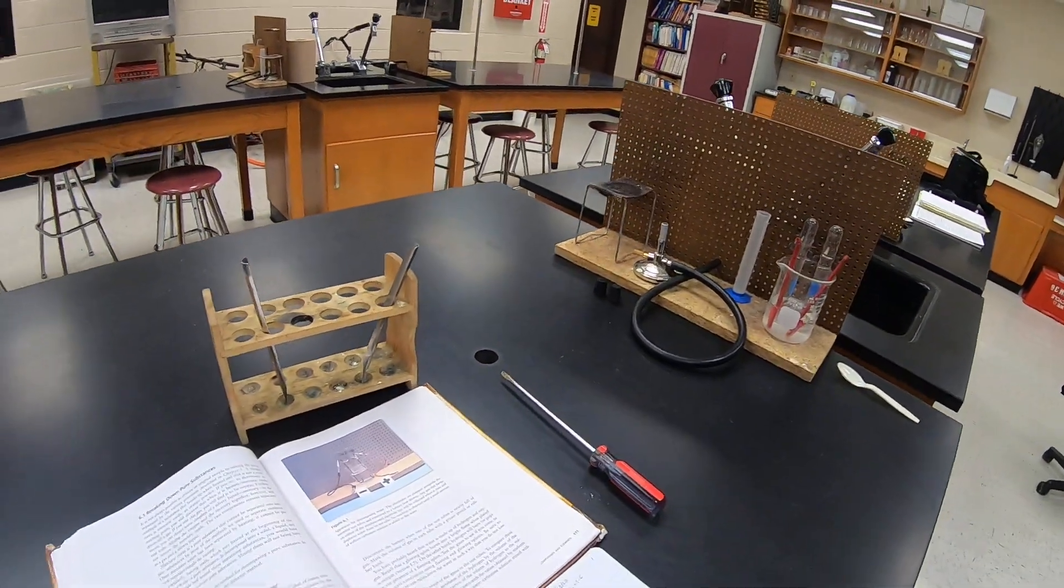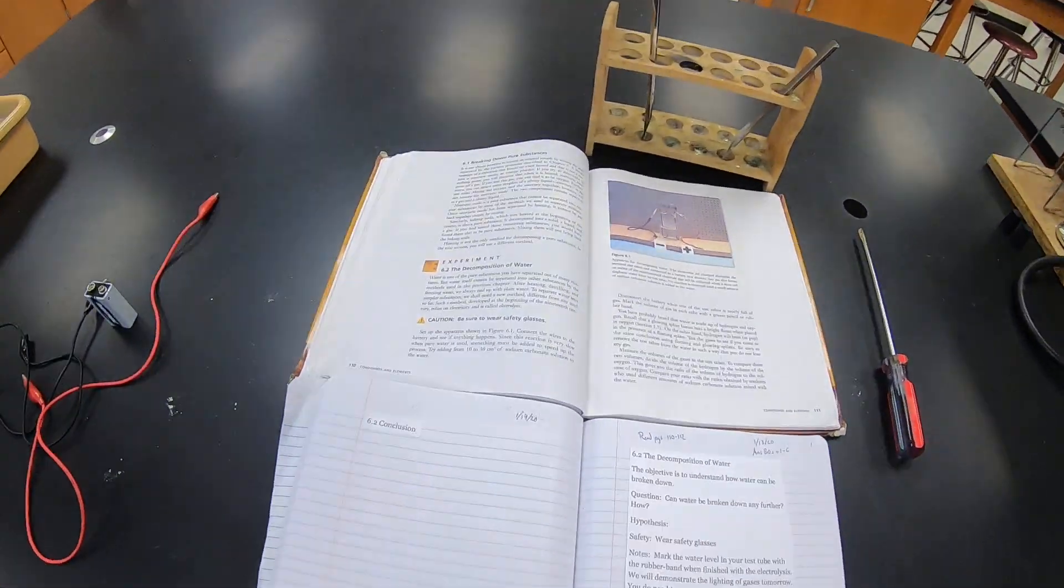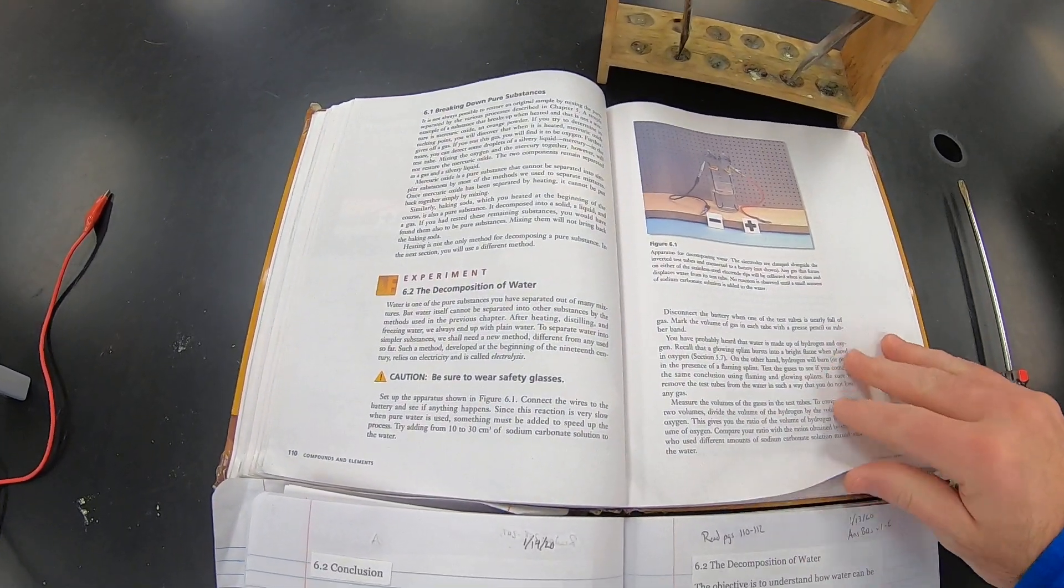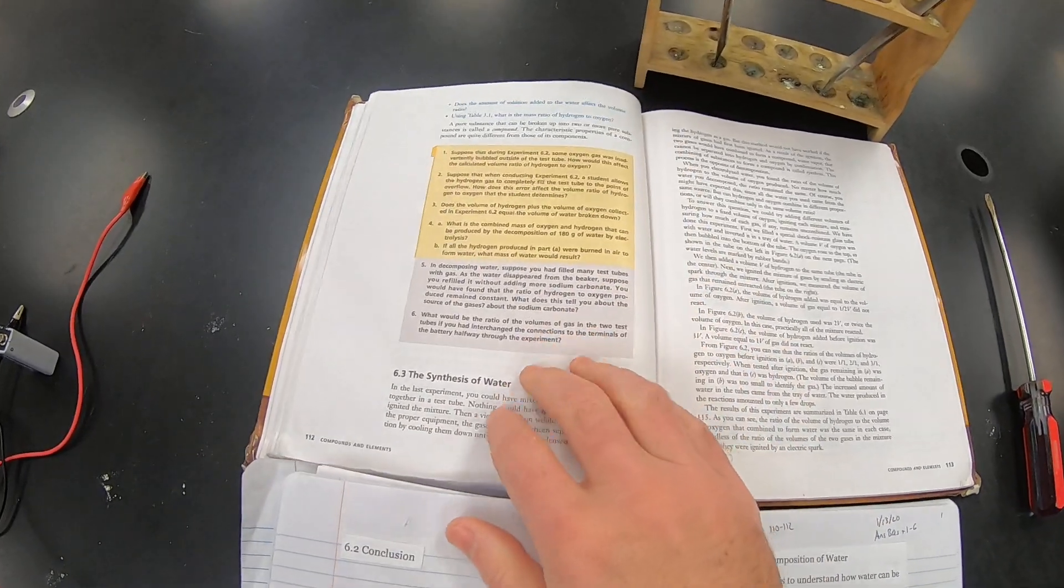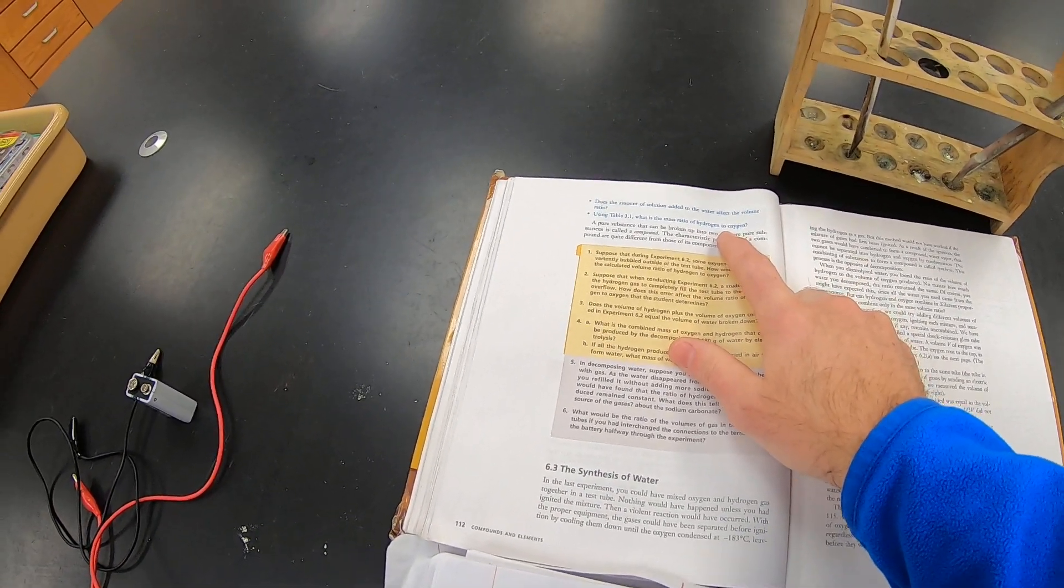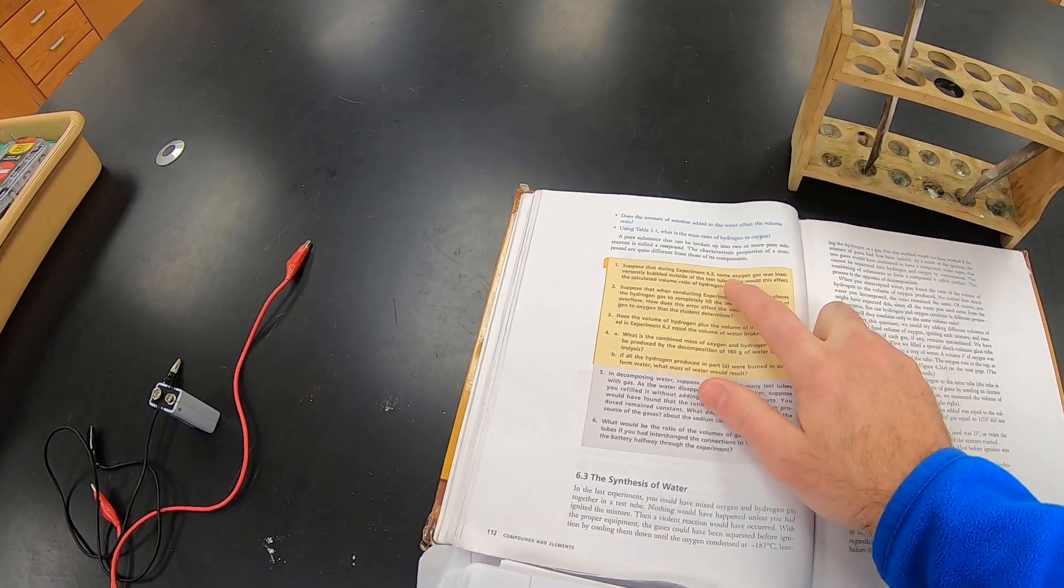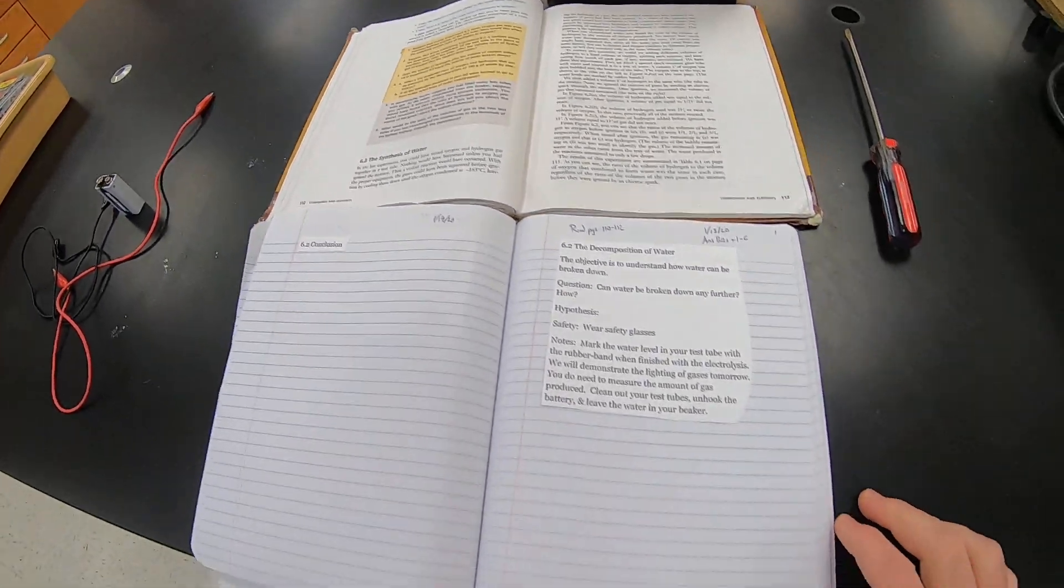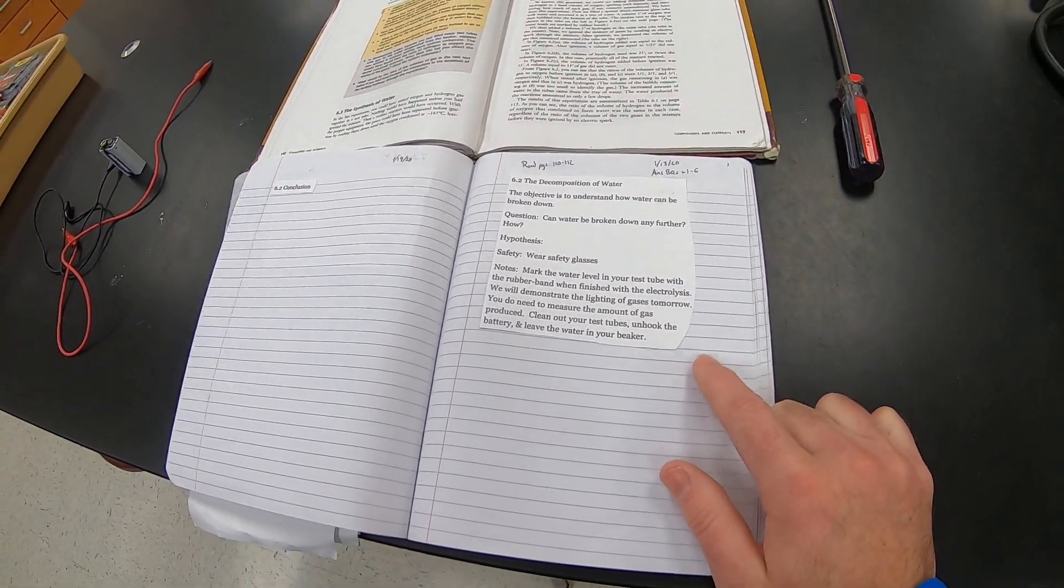All right, we're going to do the first part of the decomposition of water lab. This is stuff from the book, page 110, 111, and 112. There's two blue questions to answer and six numbered questions that you'll need to answer. And here's the notes that you'll need in your book.